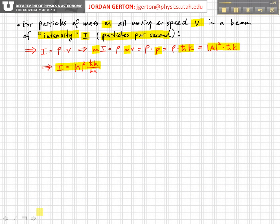So if we have a beam of particles, and the particles all have mass m and are all moving at the same speed v, then we can define an intensity for this beam, which we can define basically to be the particles per unit time, particles per second. Normally we define intensity as the number of something per unit time per unit area.